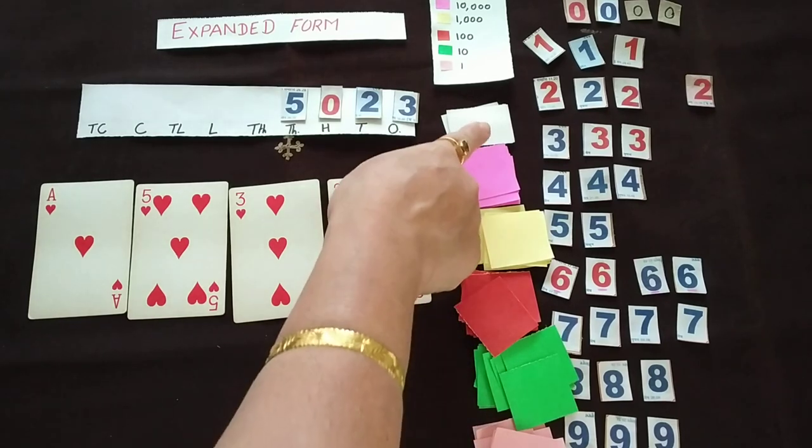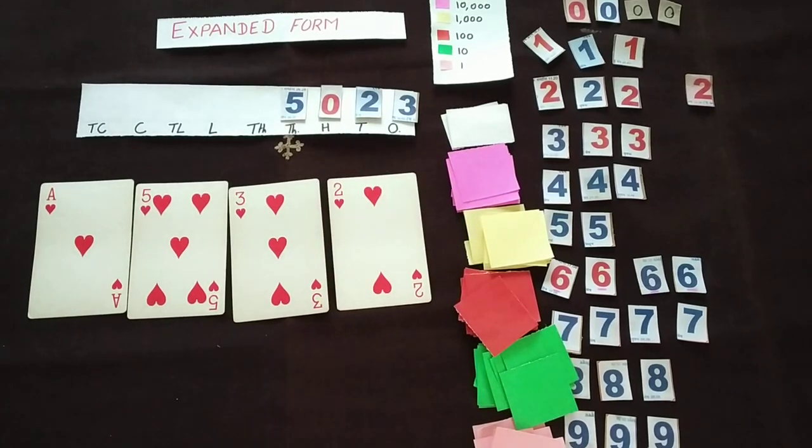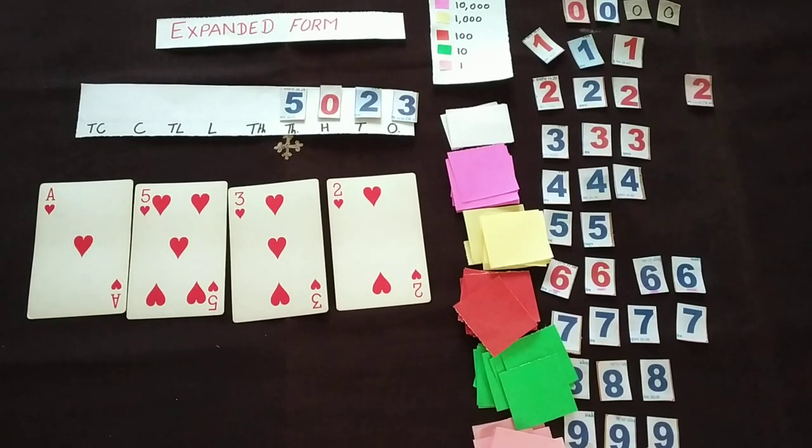So the child will take this colorful sheet and child will arrange over here. So this you can do as a group activity also. You can divide the class into groups of 5 students.